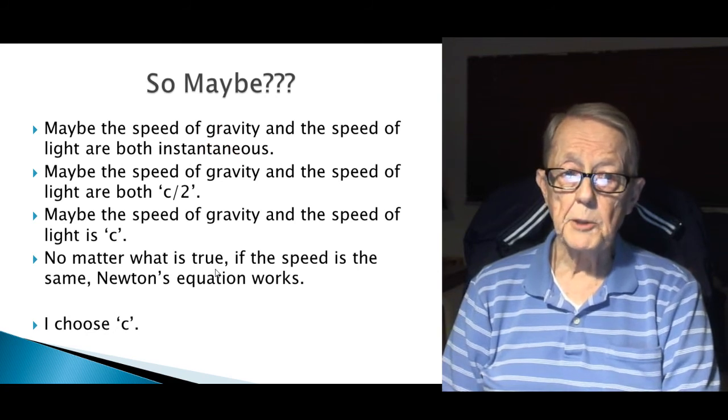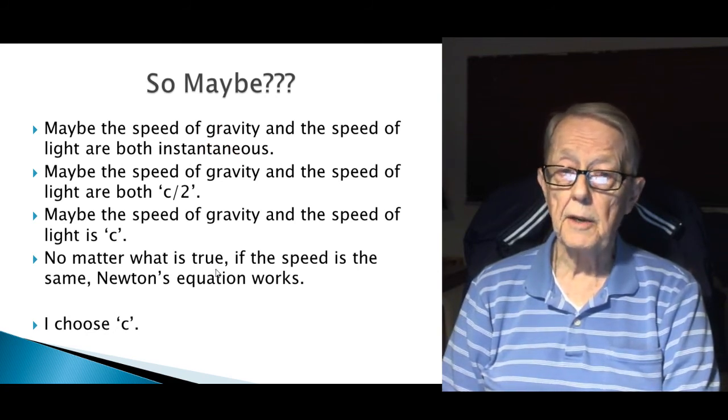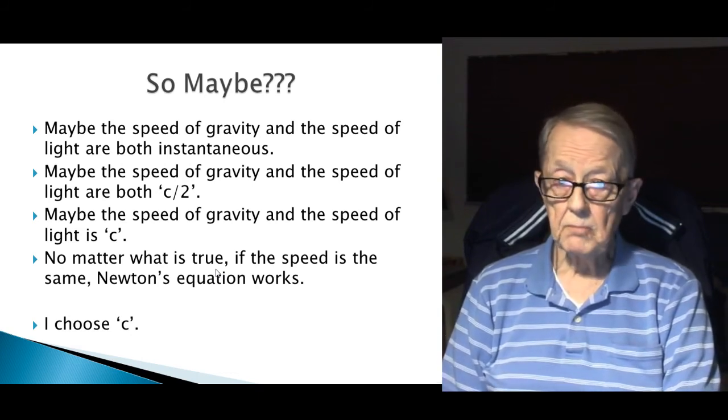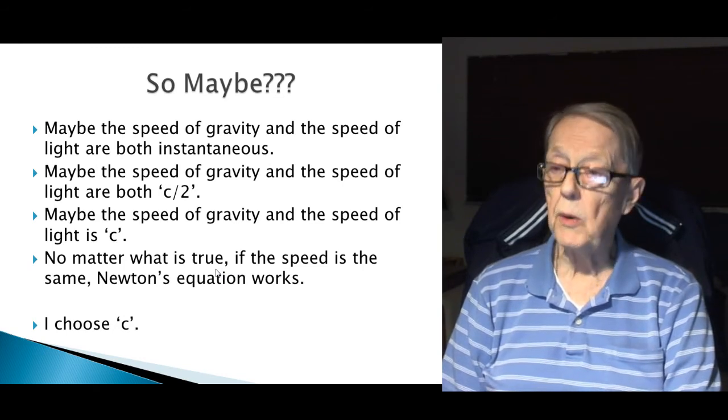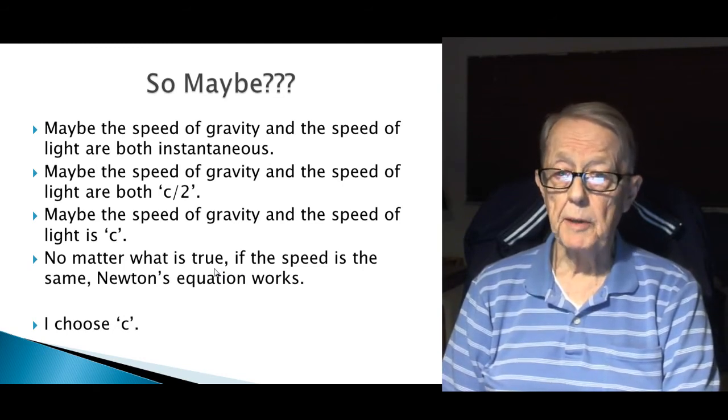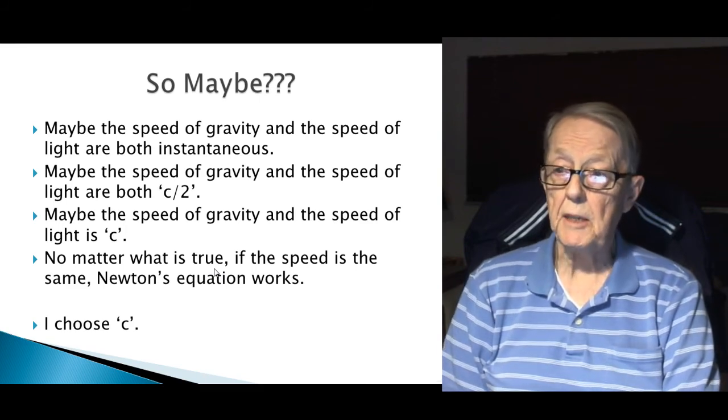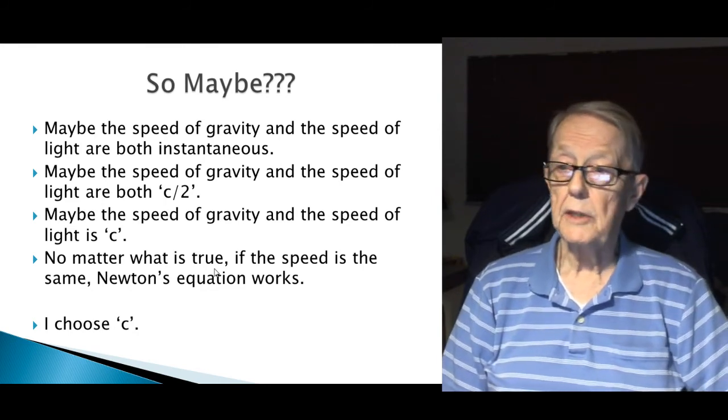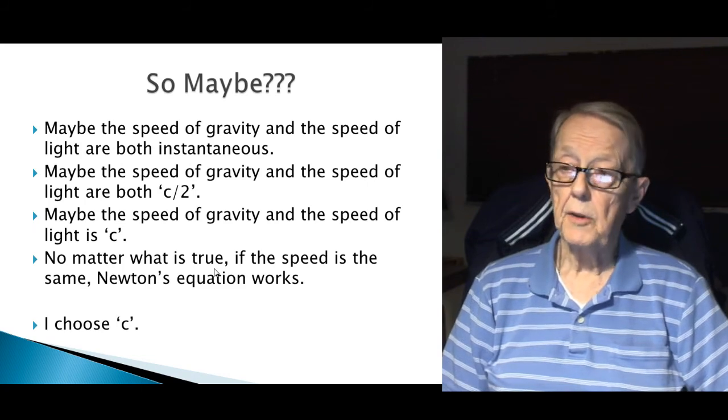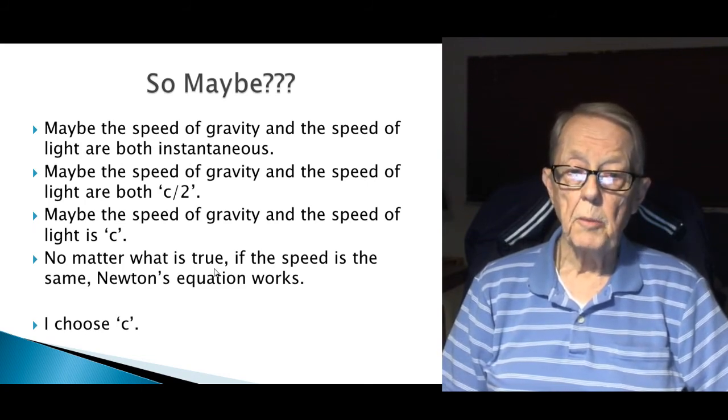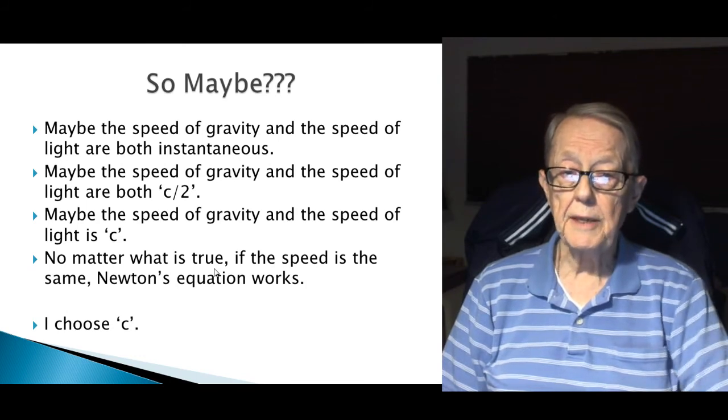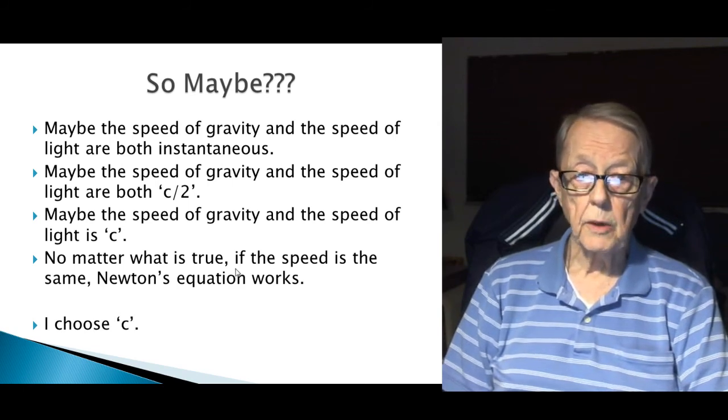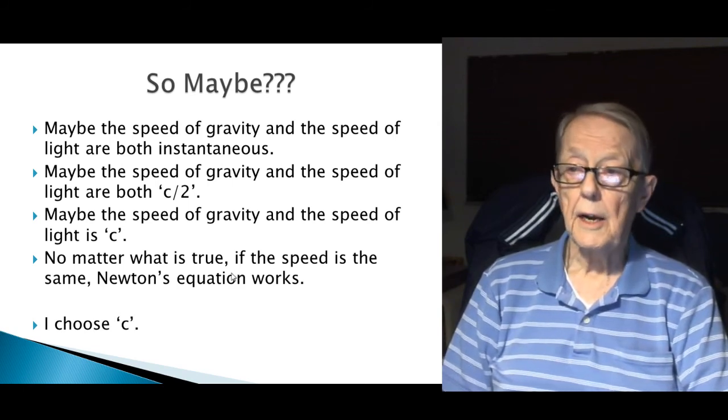So, maybe the speed of gravity and the speed of light are both instantaneous, and every astronomer makes that assumption and uses it, and uses Newton's equation, and it works. Maybe the speed of gravity and the speed of light are both half c. Maybe the speed of gravity and the speed of light are actually c, 3 times 10 to the 8th meters per second. No matter which one of these three is true, if the speed of light is the same, I conclude that the Newton's equation works. And out of the three choices, obviously, I choose c.